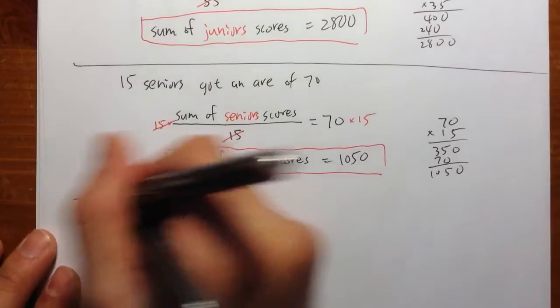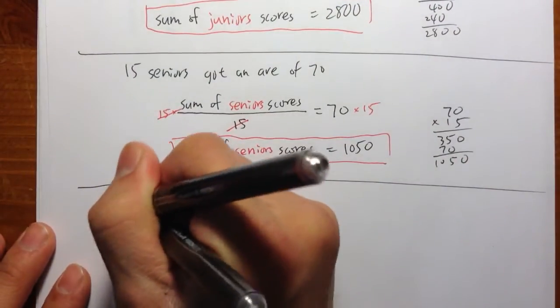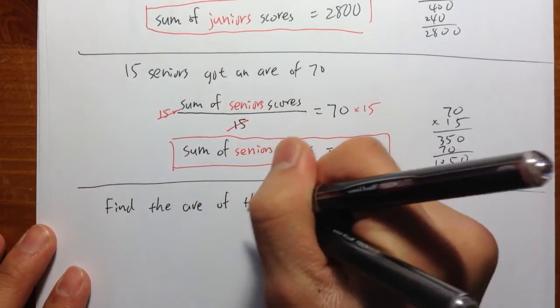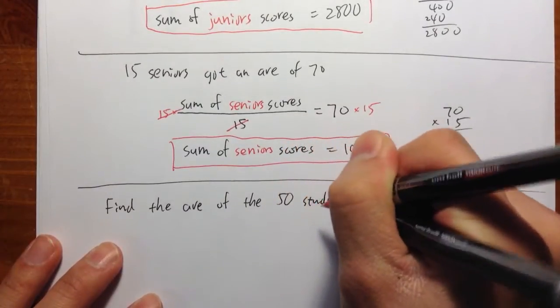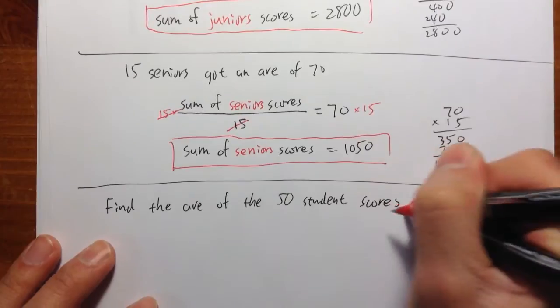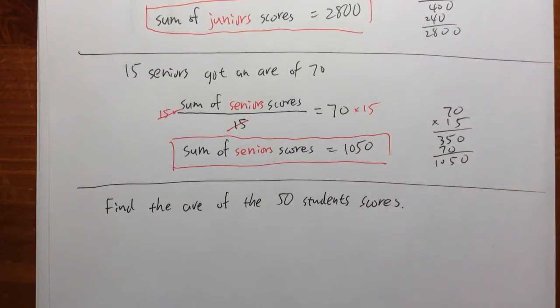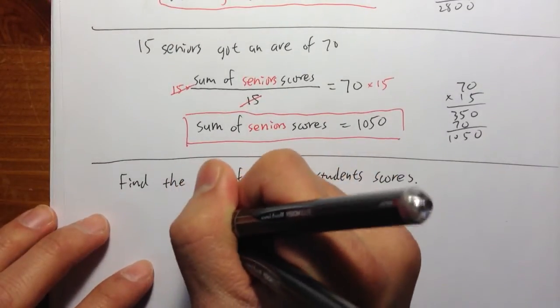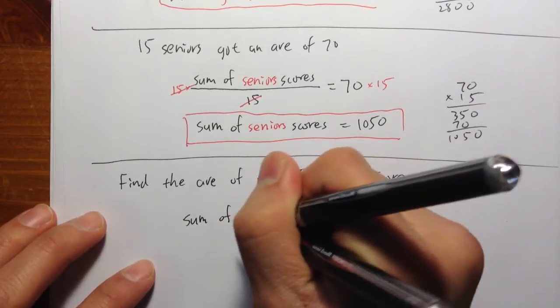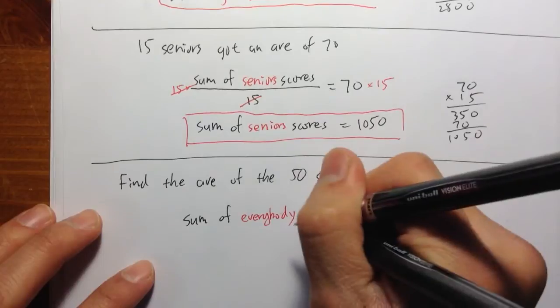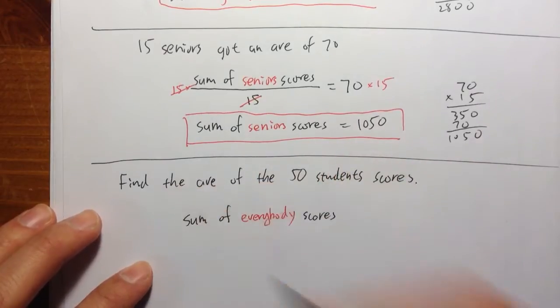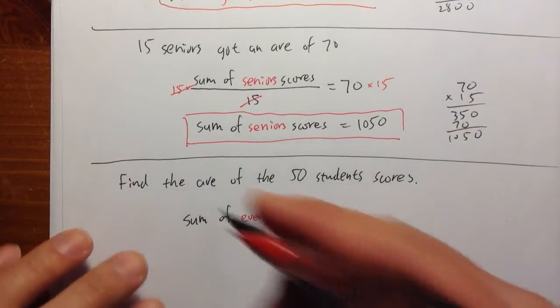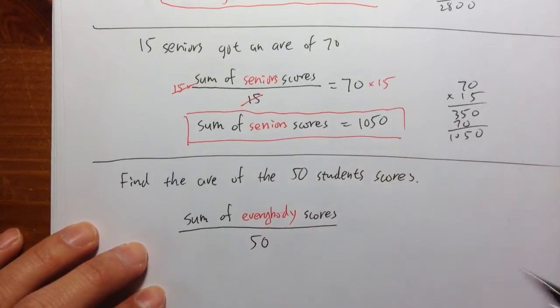So finally, we are going to find the average of the 50 students' scores. So all the 50 students, including seniors and including juniors. So what we need to do first is we need to calculate the sum of everybody's scores. So I want to take a look of all the 50 exams and then add up all the scores. And then divide by the total number of students, which is 50.